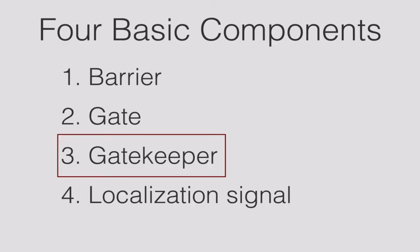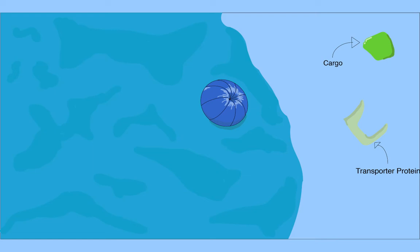This problem is solved by the third component of protein transport, the gatekeeper. Gatekeepers consist of transporter proteins that bind specific cargo and carry them to the gate.